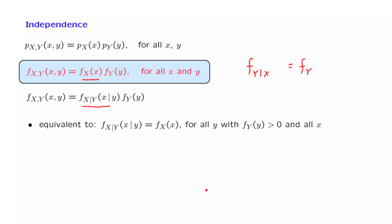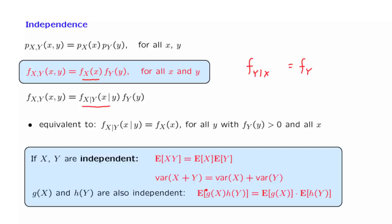Finally, let us note some consequences of independence, which are identical to the corresponding properties that we had in the discrete case. And the proofs are also exactly the same. So the expectation of the product of independent random variables is the product of the expectations.